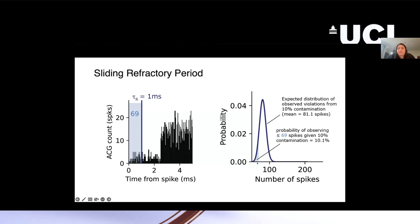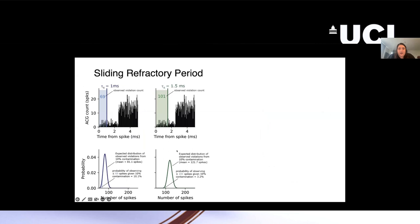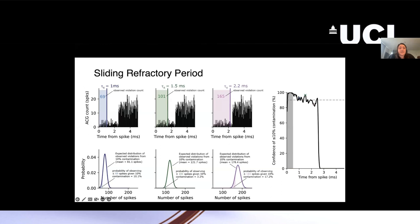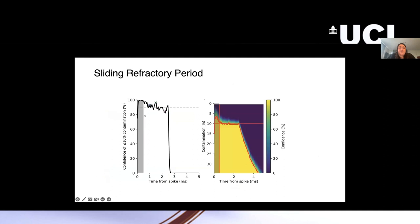The probability of observing fewer than the number of spikes we did observe is this shaded region here. This gives us basically a probability of observing the number of spikes we did observe, given a certain level of contamination. We now can do this for different time points. So now I'm doing this at an example time point of 1.5 milliseconds, of 2.2 milliseconds. What you can see is for each of these, we get this probability of observing that number of spikes, and we can plot 1 minus or 100 minus that to get the confidence that we have that the neuron has less than or equal to 10% contamination. I'm just plotting these three example points here along the line. The dashed line here is 90%, which is our picked threshold for this.